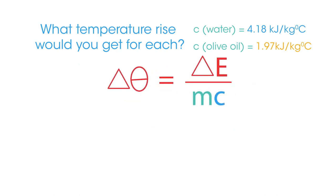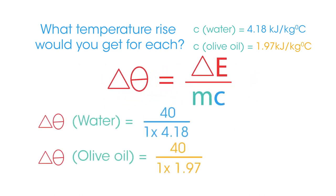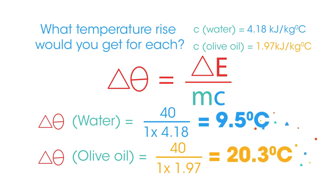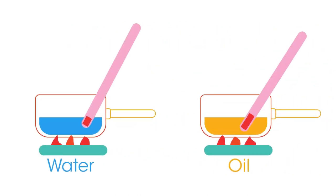What temperature rise would you get for each if one kilogram of each had 40 kilojoules of energy transferred? If we rearrange the equation, Δθ gives the temperature rise. For water we get 9.5 degrees Celsius, and for olive oil we get 20.3 degrees Celsius.